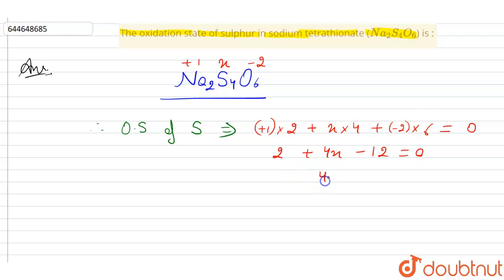So 2 plus 4x minus 12 equals 0, that is 4x minus 10 equals 0, so 4x equals 10. That means x equals 10 by 4, so x equals 2.5, that is plus 2.5.